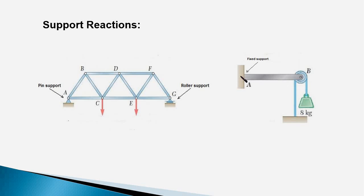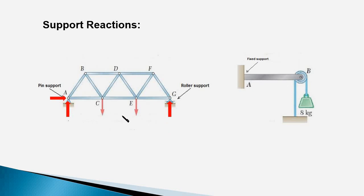Do you know why there are different types of reactions associated with these different kinds of supports? For example, you have two components of a force on the pin support, a single force at the roller support, and two forces along with the moment at the fixed support. If you are seeking answers to such questions, watch this video till the end. Let's get started.